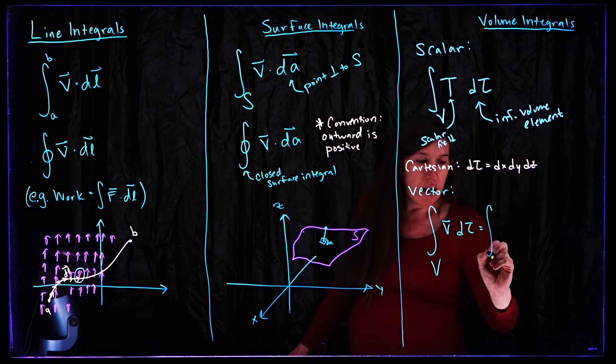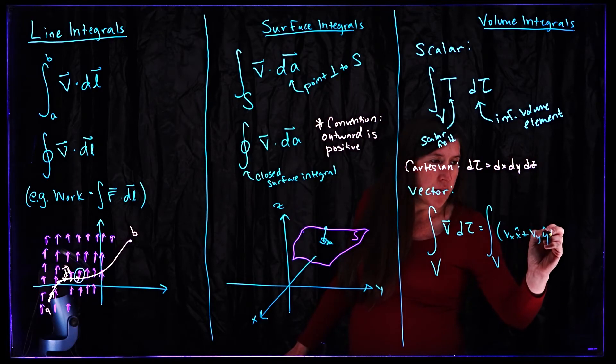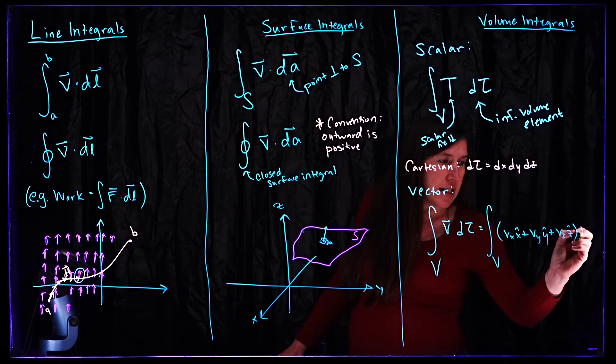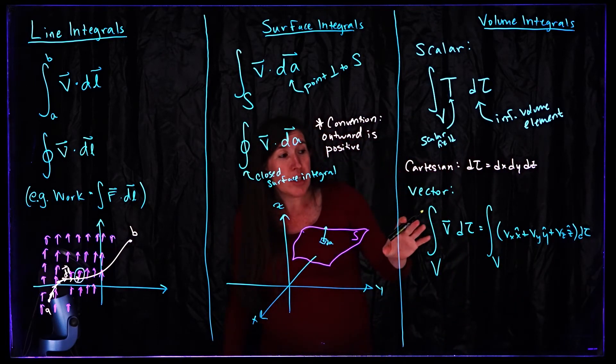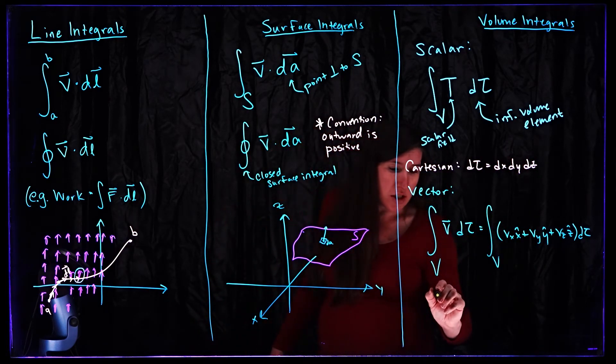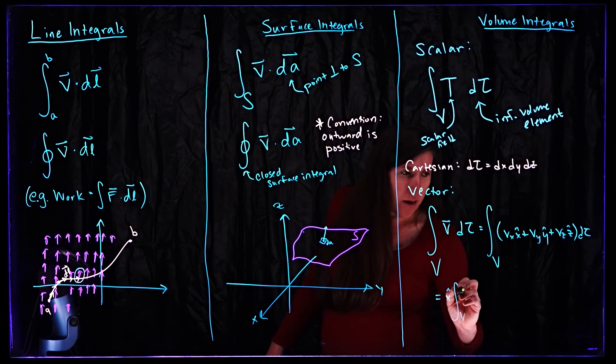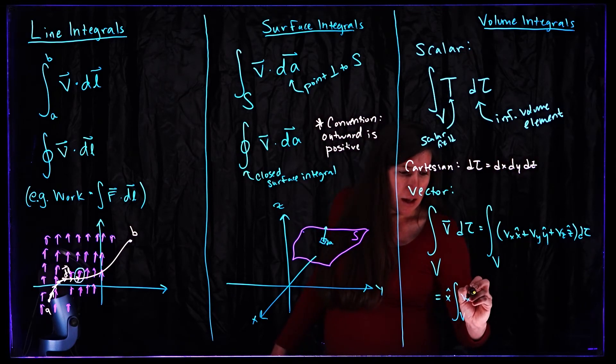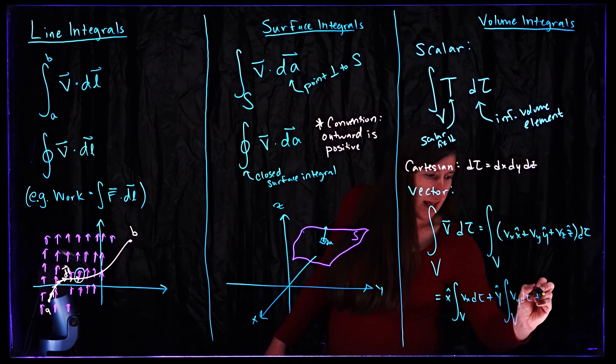We can, if we're working in Cartesian coordinates, we could write our vector in Cartesian coordinates. So this is v sub x x hat plus v sub y y hat plus v sub z z hat d tau. And one of the nice things about Cartesian coordinates is x hat, y hat, and z hat are constant vectors and so we can just break up this integral and pull those out. So this is actually equal to x hat integral over our volume of the x component of our vector field d tau plus the same thing in the y direction and the z direction.